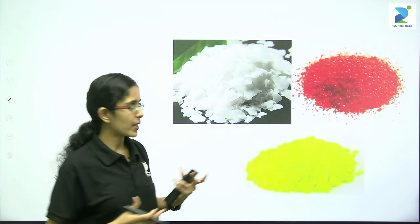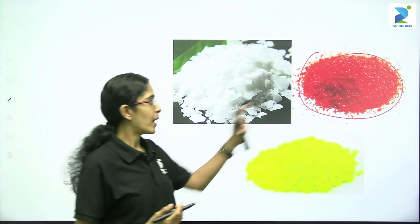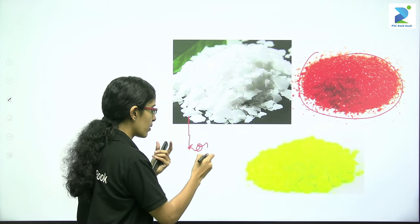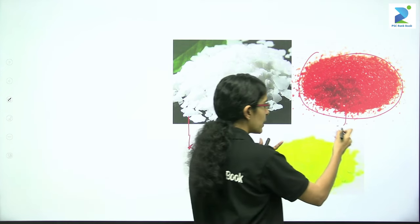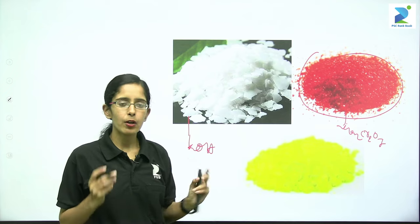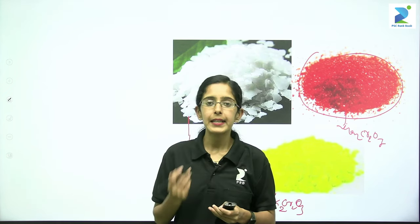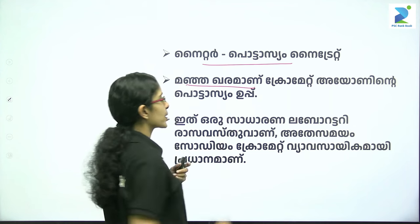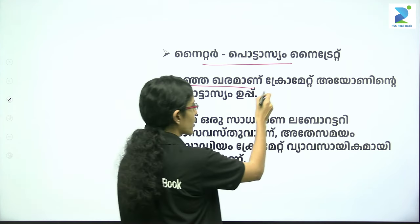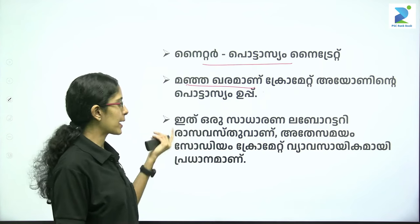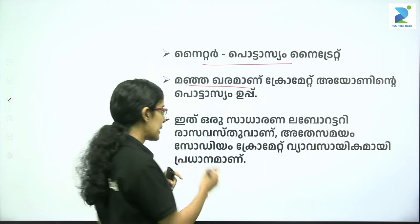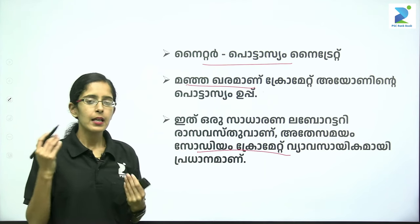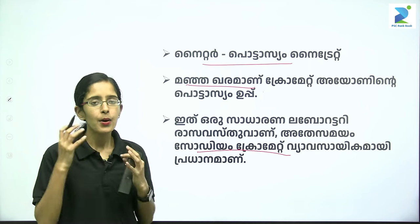The texture of potassium dichromate: it is orange color. Potassium hydroxide is white color. Potassium chromate is yellow color — this is a good laboratory chemical. These are potassium chromates.